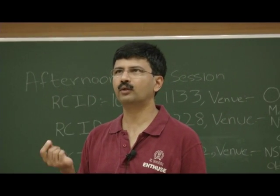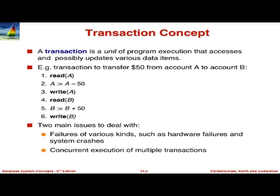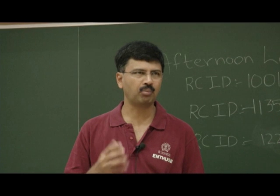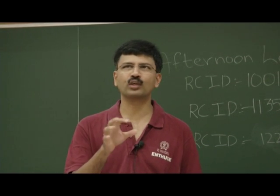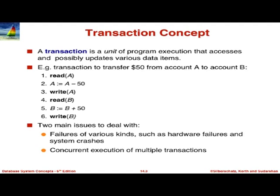You're reading some particular account number, but we abstract that away by saying you're reading A, writing A, reading B, writing B — A and B are abstract things. When looking at something complex, it always helps to abstract away details, simplify it, and focus on the hard aspects. Now, why is the notion of transaction important? The main issues are twofold.